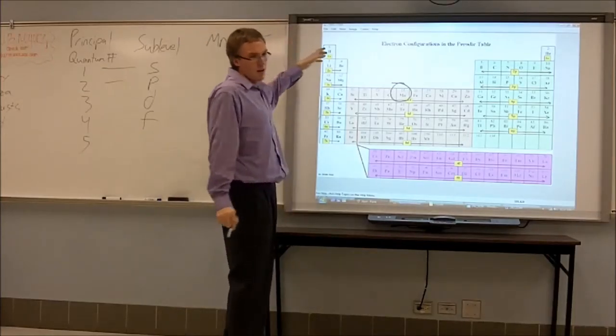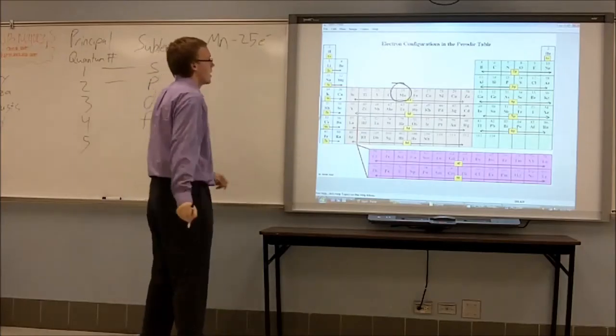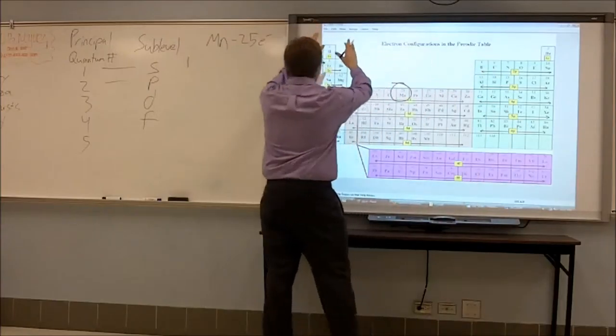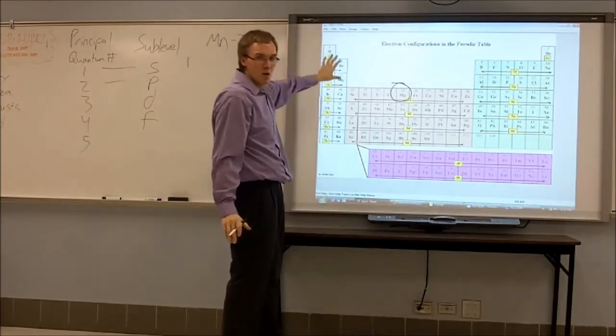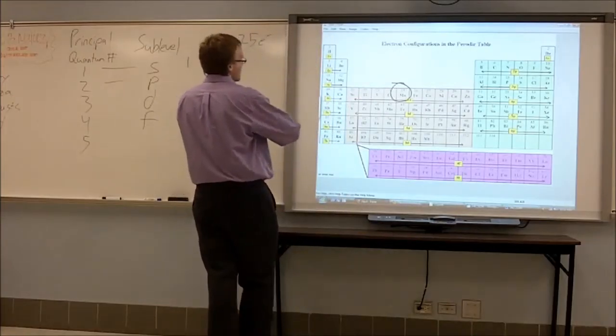Okay? The first thing we are going to do when writing the electron configuration is go to the periodic table and start in the upper left hand corner. The first thing we will see here is we are going to start at the number one. We are going to start with the first principal quantum number.